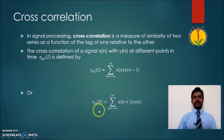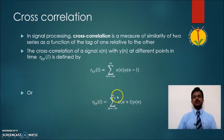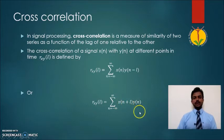Similarly, we can have another equation for the cross correlation: R of XY of L equals summation from N equals minus infinity to infinity of X(N plus L) into Y(N).